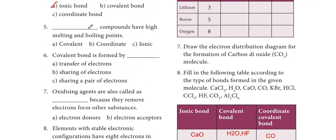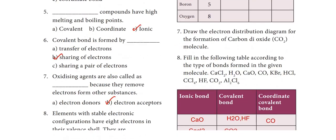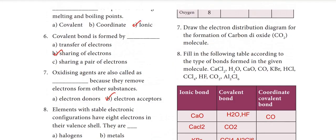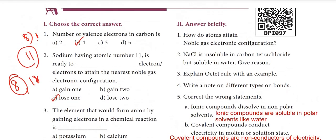Next fill-in-the-blank questions: ionic compounds have high melting and boiling points. Covalent bond is formed by sharing of electrons. Oxidizing agents are also called electron acceptors because they remove electrons from other substances. Elements with stable electronic configuration have 8 electrons in their valence shell — they are noble gases.